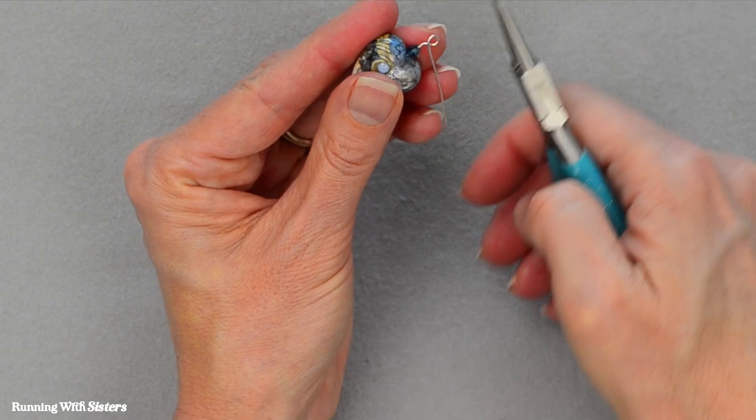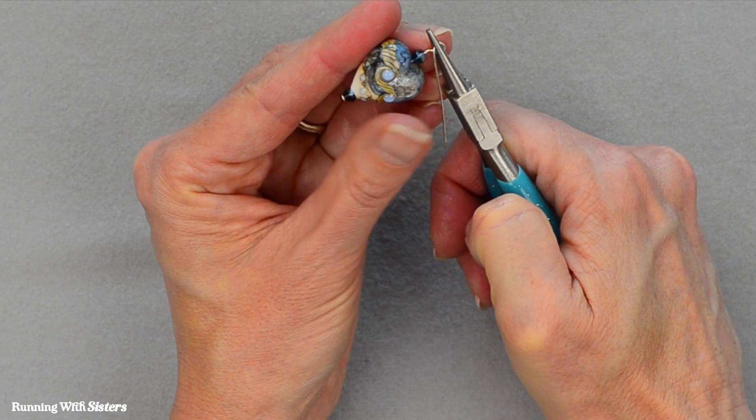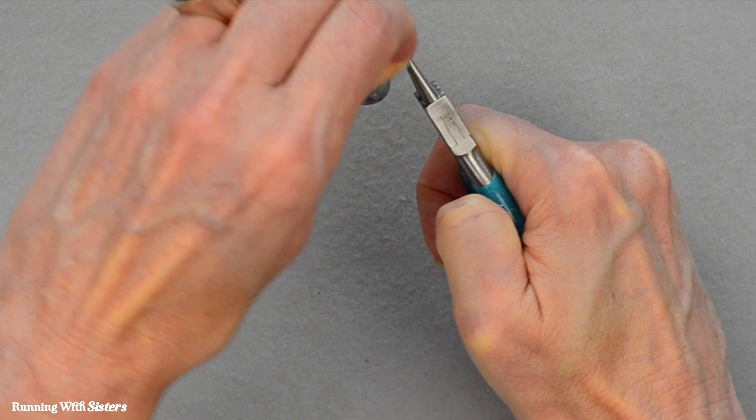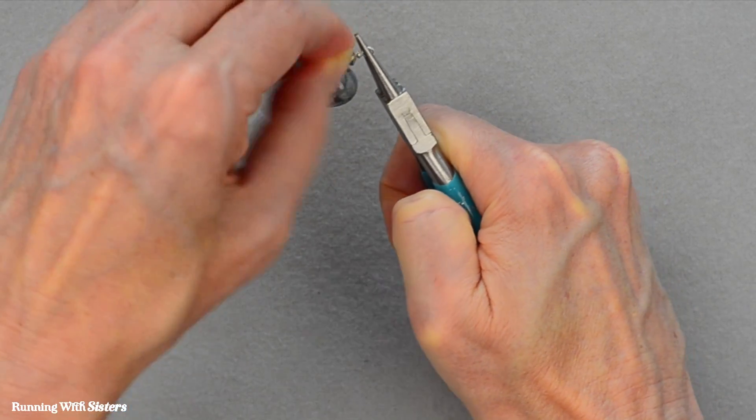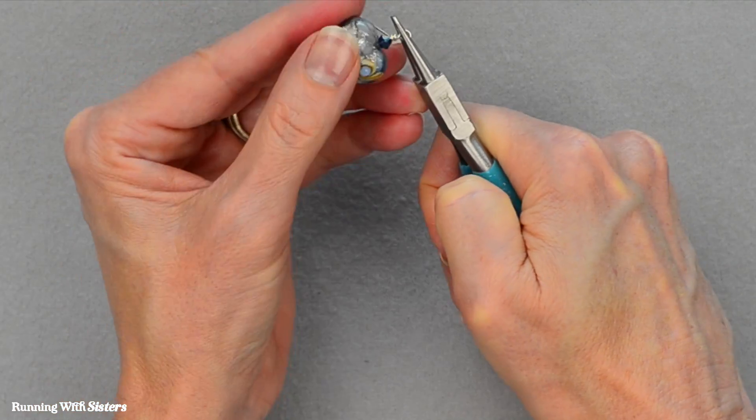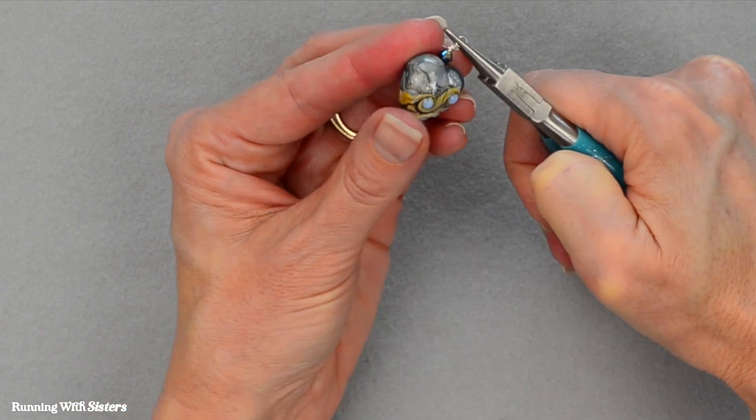Now I'm going to take the round nose pliers and I'm going to grasp across the loop just like that. And I'm going to pull the tail of that head pin wire around twice. It's kind of like you're pulling it around the neck of that head pin right above the bicone.